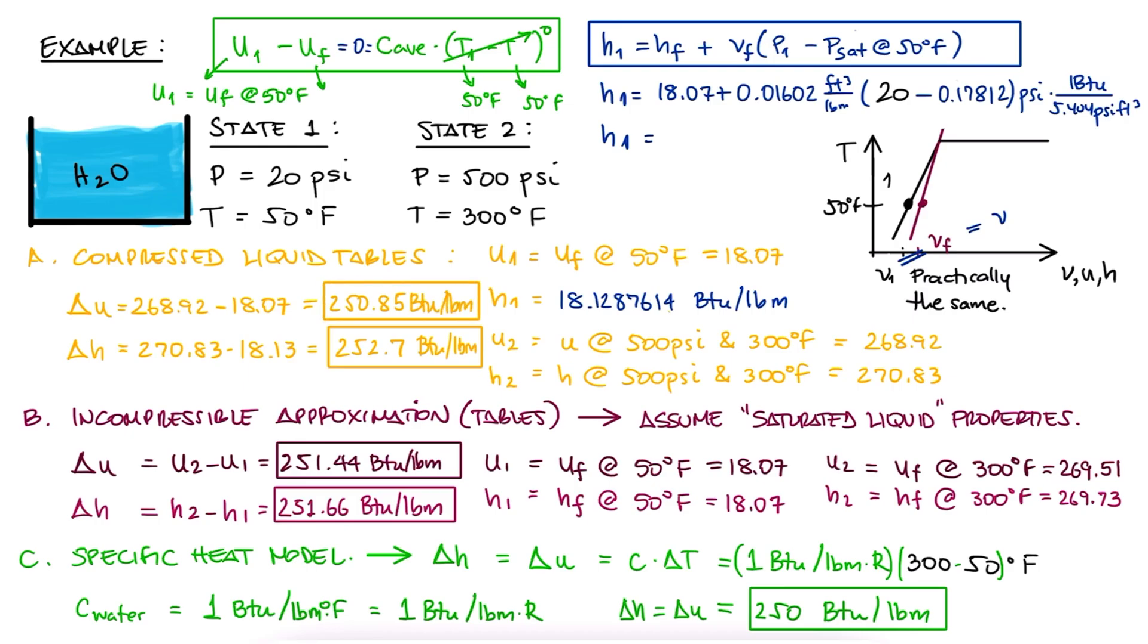This shows us that the imprecision that method 3 yields comes from the fact that we are assuming a constant specific heat of 1, regardless of the temperature. But even with that big assumption, even by assuming that C is the same for 50 or 300 Fahrenheit, or that C equal to 1 is the average C for temps between 50 and 300, we are getting very close to the more accurate values with a calculation that literally took us 5 seconds.